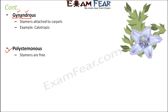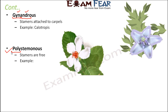The next type is polystemons, where the stamens are free — 'poly' meaning many individual stamens. The stamens are not attached to the calyx, corolla, or carpels; they are free from everything. In this example you can see the stamens, the petals, and the sepals are all free, and the gynoecium is also separate.